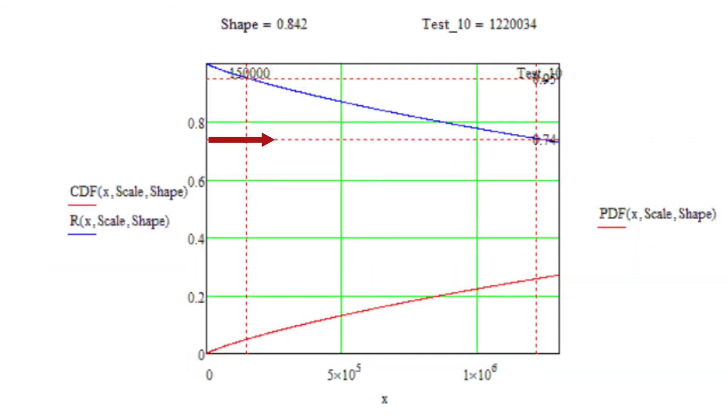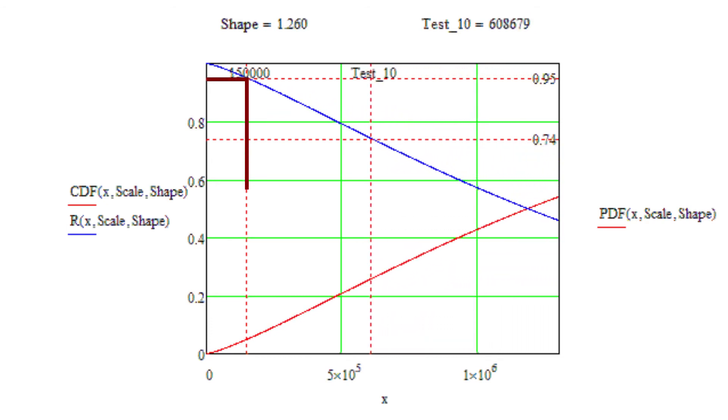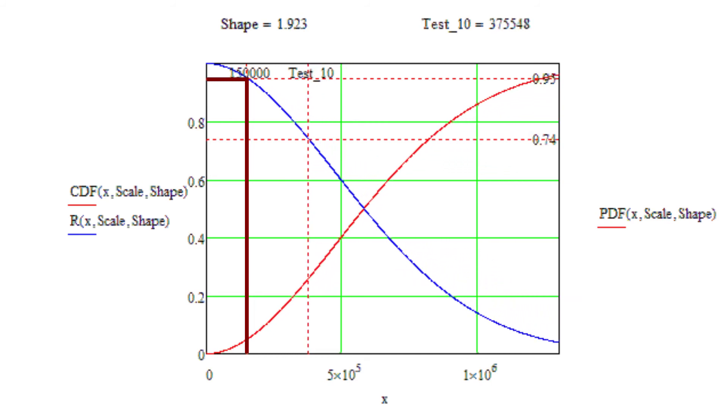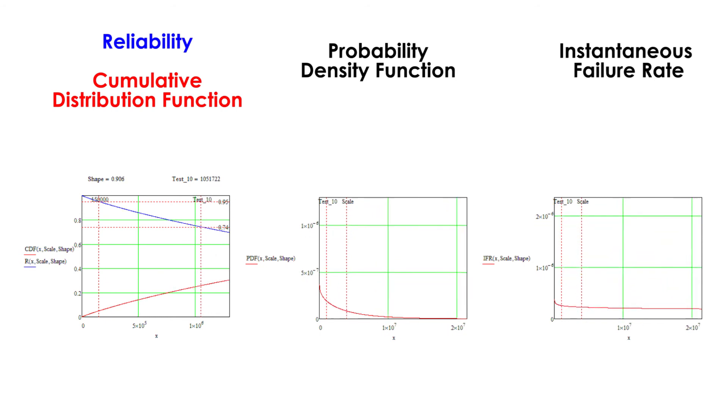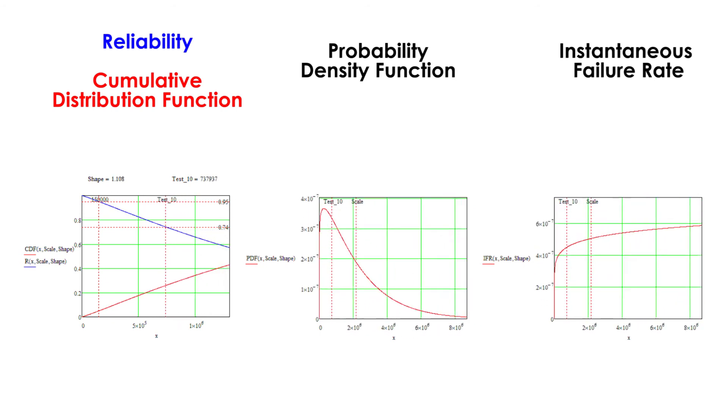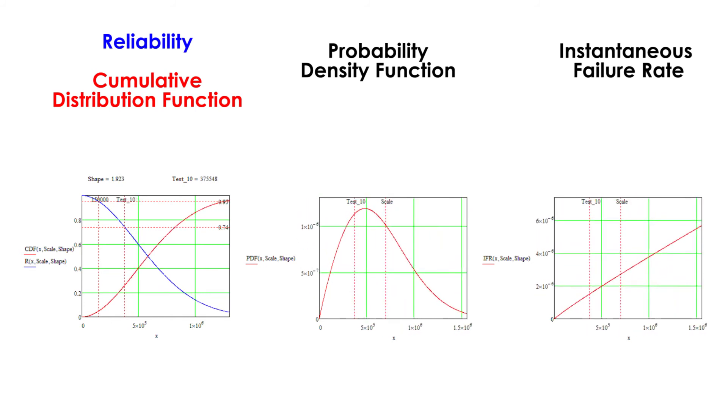This animation shows the reliability function with the criteria of 95% reliability at 150,000 km. The testing time for 10 parts with 0 failures is the time at 74% reliability.